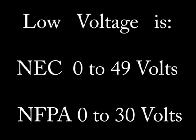The NEC defines low voltage as 0 to 49 volts. However, the National Fire Protection Association, commonly abbreviated to NFPA, defines low voltage as 0 to 30 volts. If you come across a question concerning any low voltage systems, make sure the question is for the NEC and not the NFPA. The test may try to determine if you know the difference between the two authorities. Know the difference.